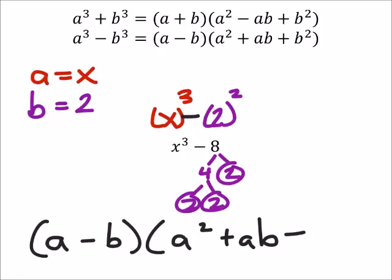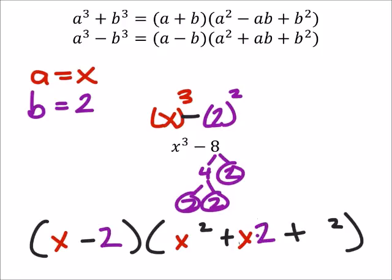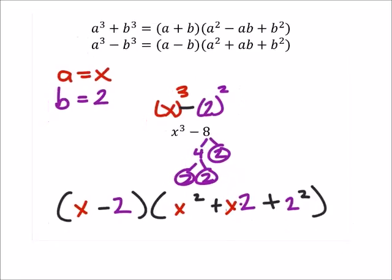Once again, all I'm going to do is replace the a's with x and b's with 2. So the a's first will be replaced with x, and now the b's will be replaced with 2. That's x times 2, by the way, and we got that 2 squared.